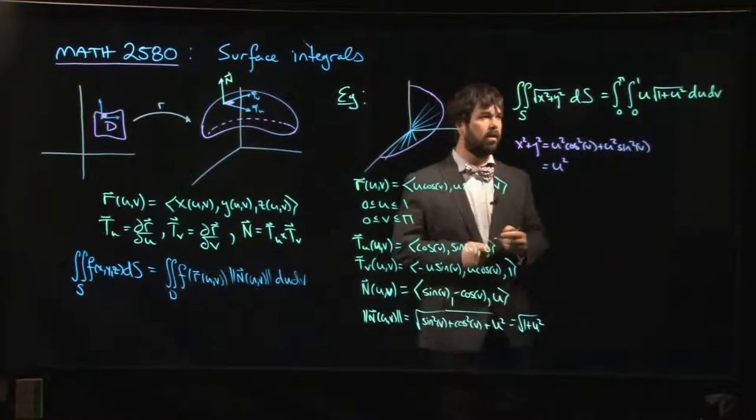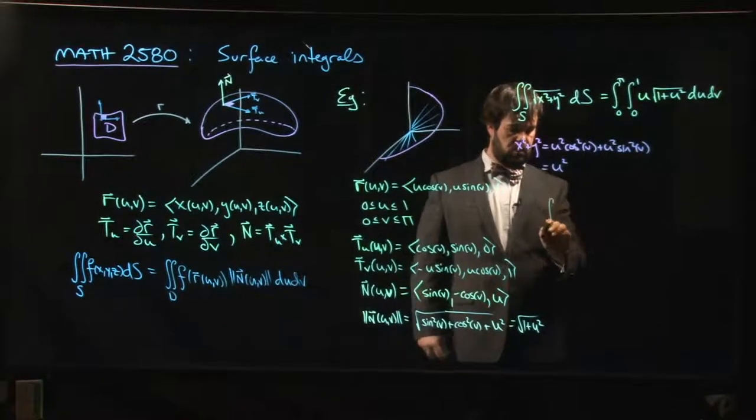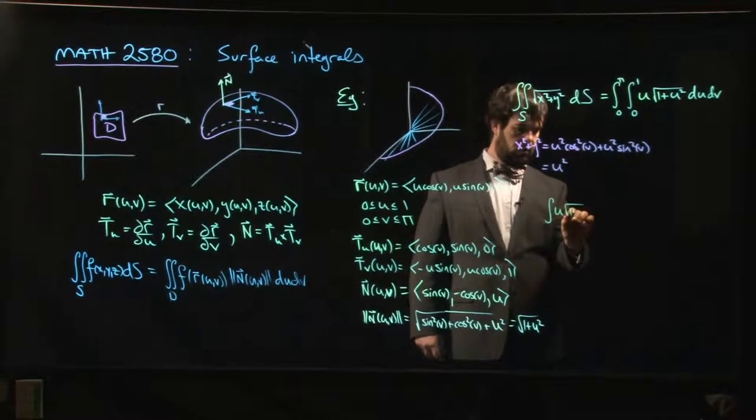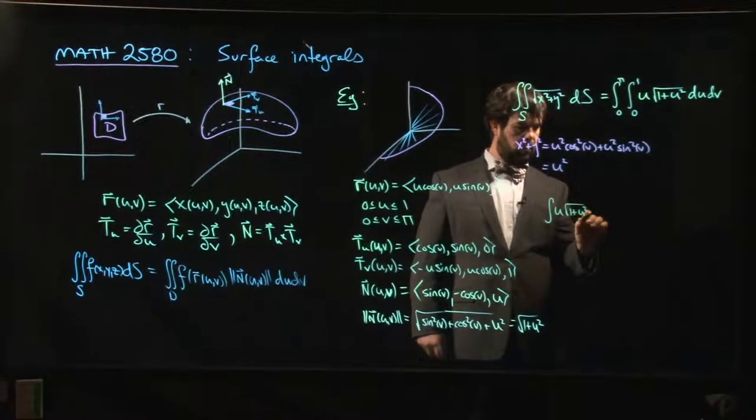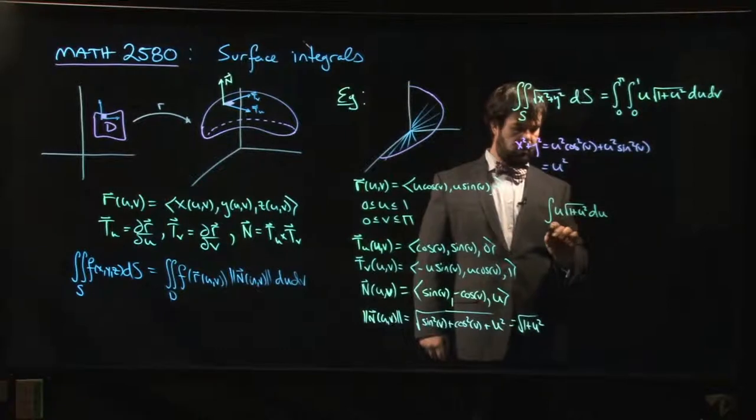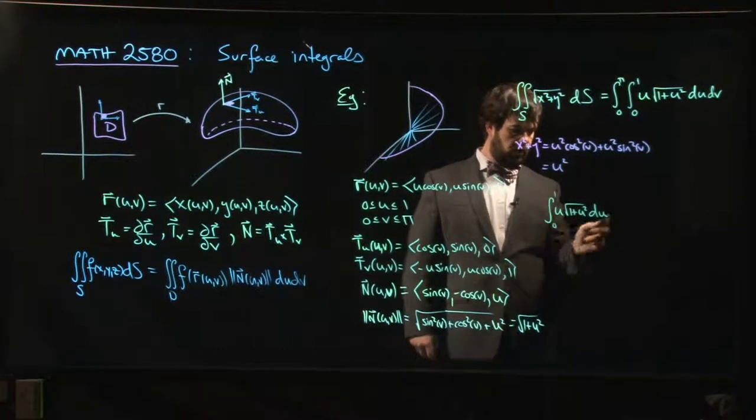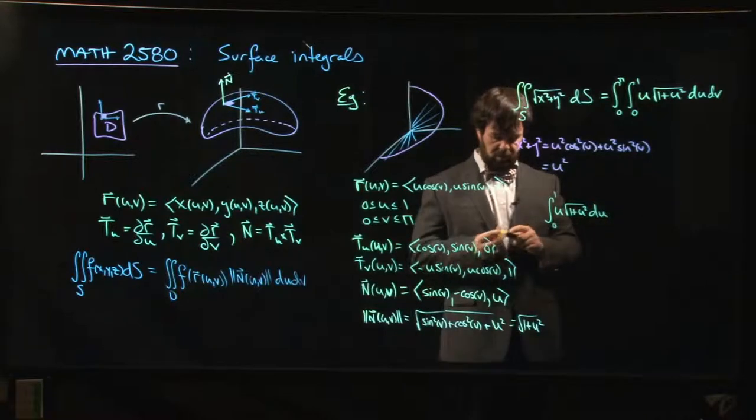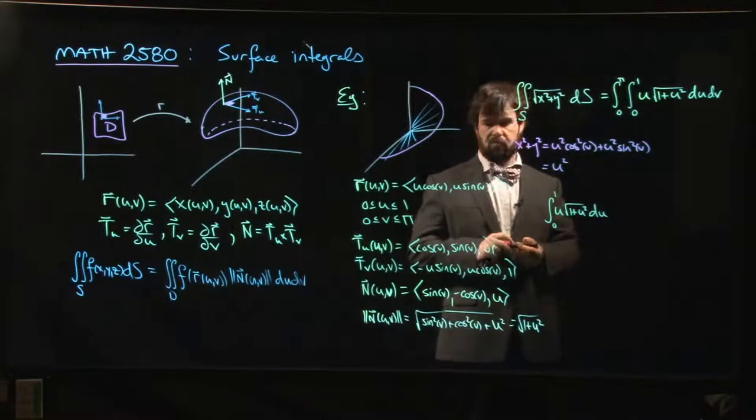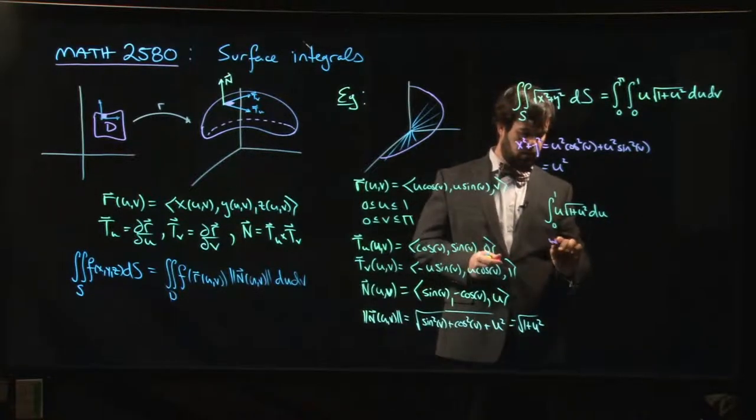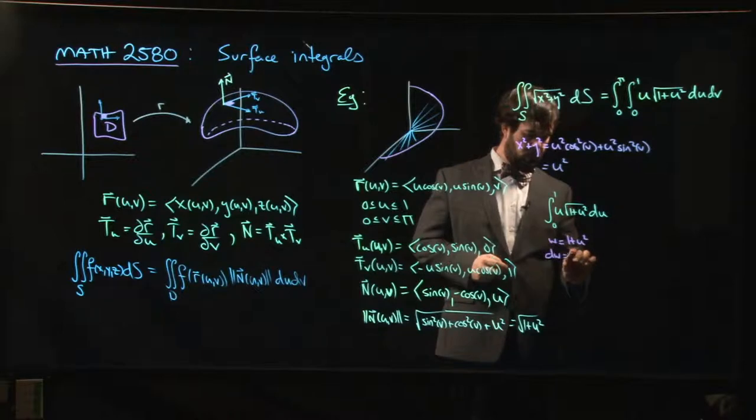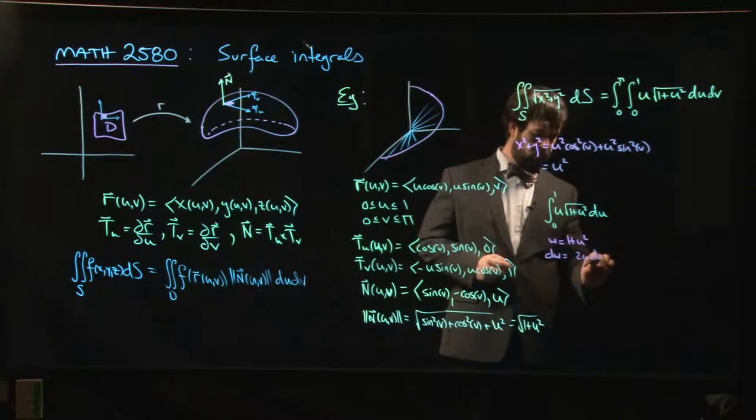Maybe we could. Let's see, what's the antiderivative for? Let's do this part. 0 to 1. So there's going to be a, well, I guess it's already u, so maybe it's not a u sub, a w sub. So let's call it w. w is 1 plus u squared, dw equals 2u du.